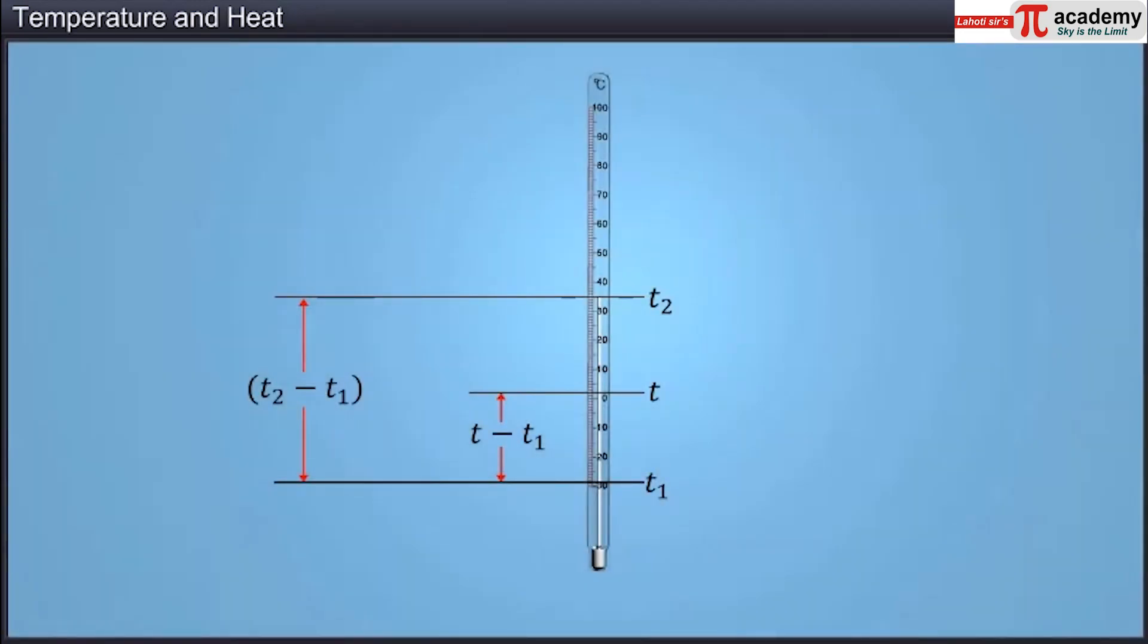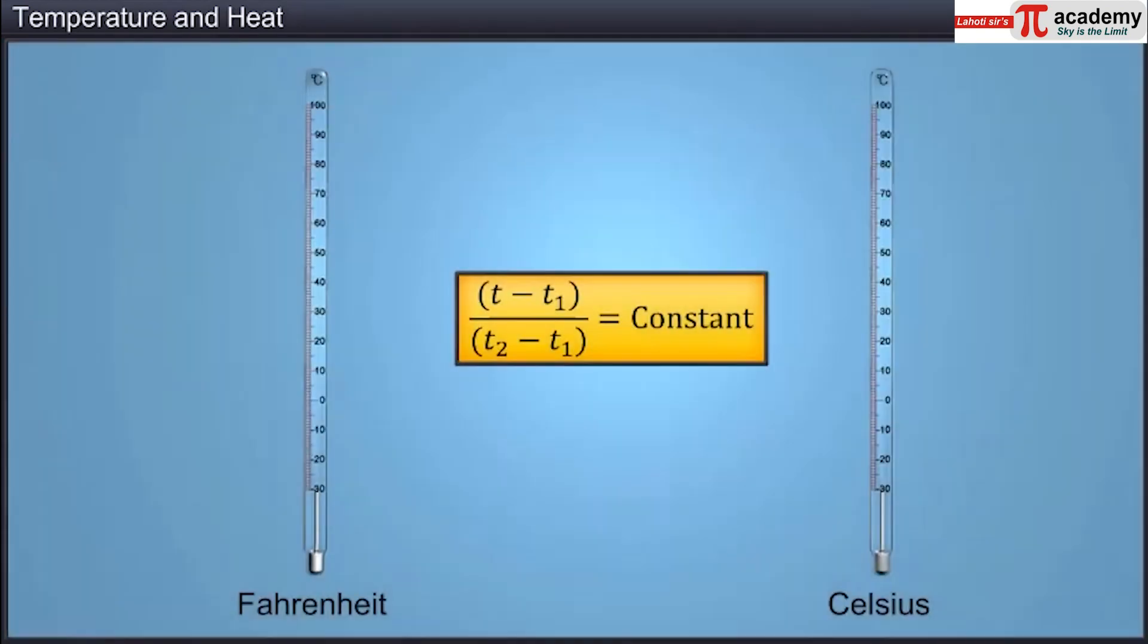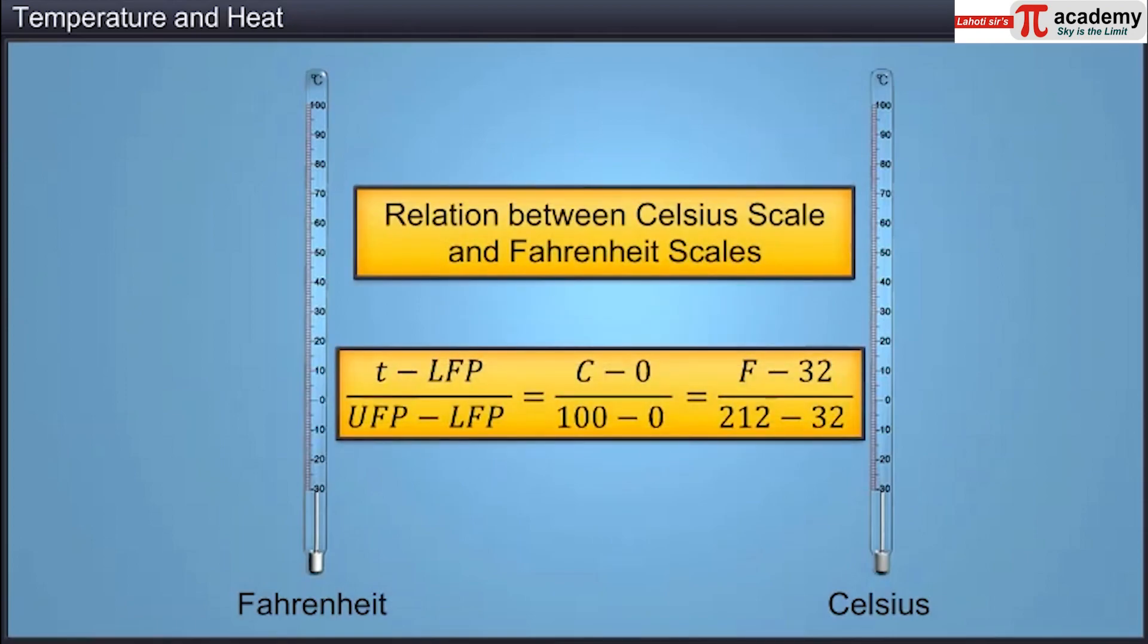For any temperature scale, the ratio T minus T1 by T2 minus T1 is constant. This can be used to find relationships among different temperature scales. The relation between Celsius scale and Fahrenheit scales of temperature can be as shown.